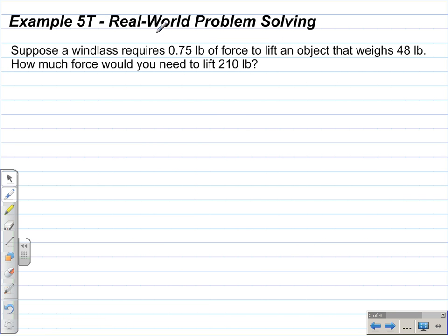Example 5, real-world problem solving. Suppose a windlass, now a windlass is a device like a crank that helps lift heavy objects, requires 0.75 pounds of force to lift an object that weighs 48 pounds. How much force would you need to lift 210 pounds?